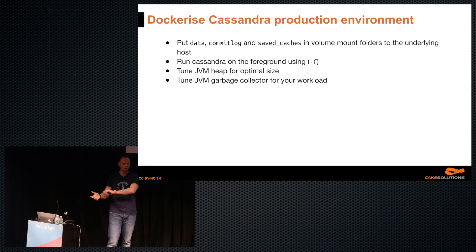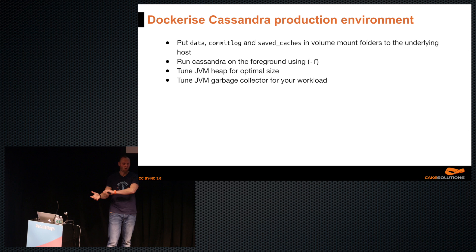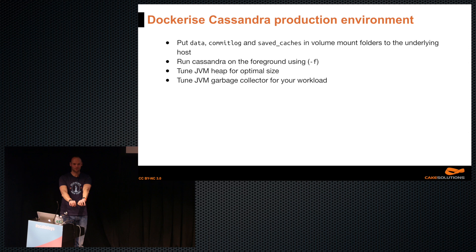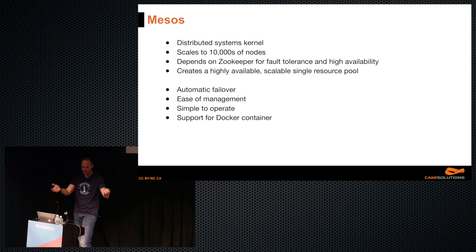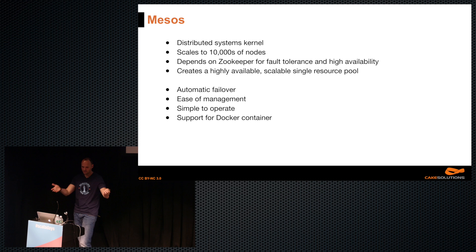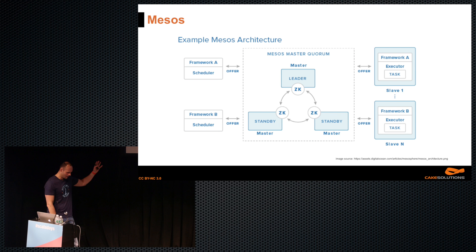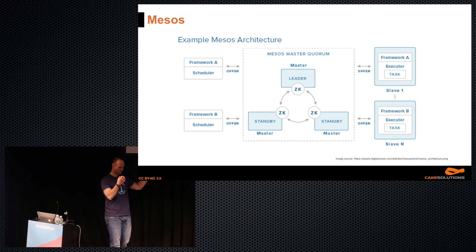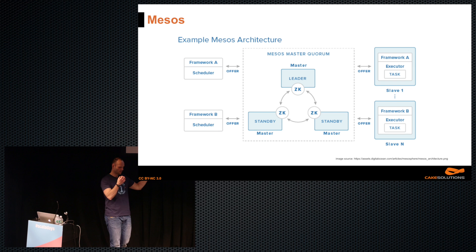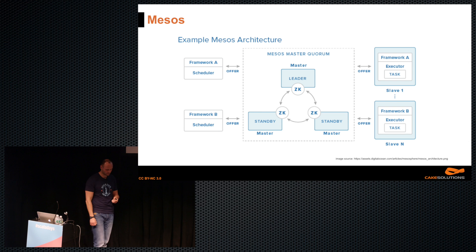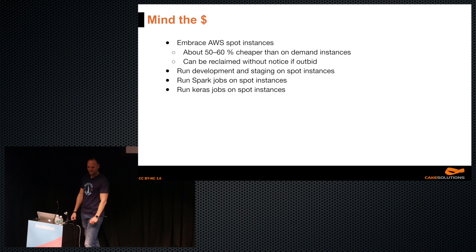For the Dockerized production Cassandra: immutable images where data, commit log, and saved caches go on mounts rather than in the container. Run Cassandra in the foreground — I've had it die many times and Marathon starts a new one, so don't forget the '-f' flag. Mesos — the official line: distributed systems kernel for tens of thousands of nodes. We don't have tens of thousands — we have 20 — but I don't want to manage them. Nice Docker container support. We map frameworks describing tasks: a framework for Cassandra, Spark, ML jobs, and Akka.